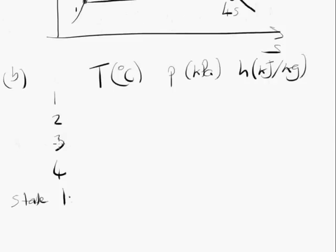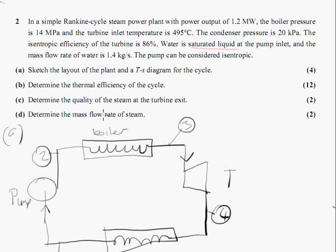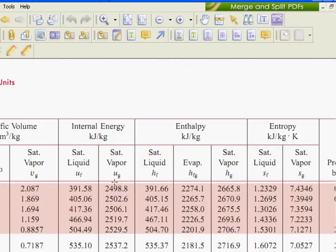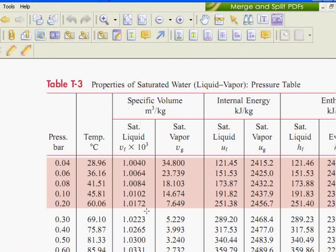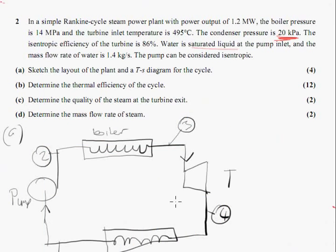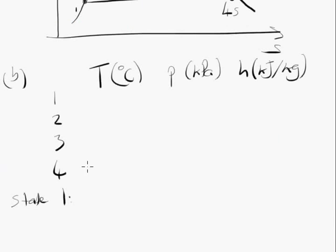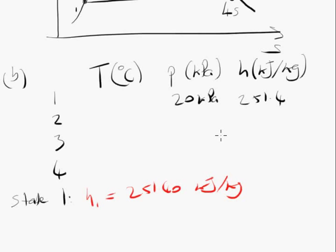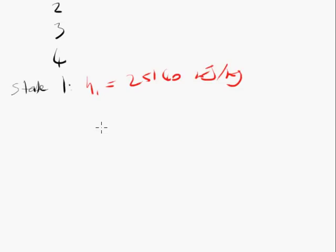State one is a saturated liquid at... What do we know about state one? The condenser pressure, we're told, is 20 kilopascals. So state one is saturated liquid at 20 kilopascals. We will go to the table. Go to the steam tables. We get an enthalpy of 251.4. State one. H1 is 251.40 kJ per kilogram. 251.4, 20 kilopascals. We don't really care what the temperature there is yet, I think. Now, that's all we need to know about state one.